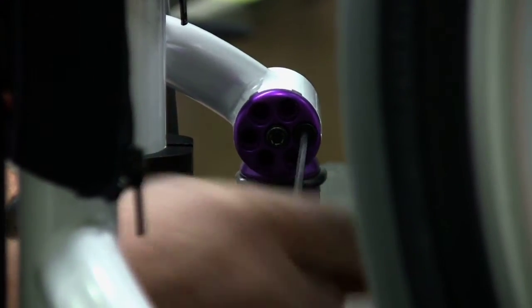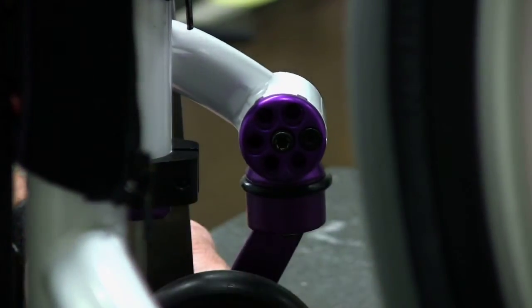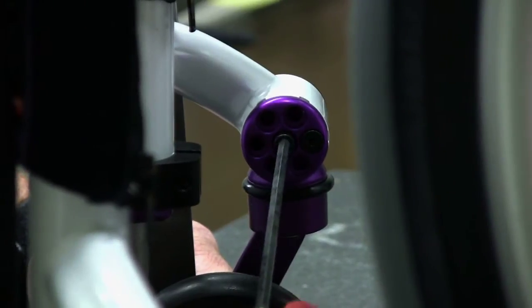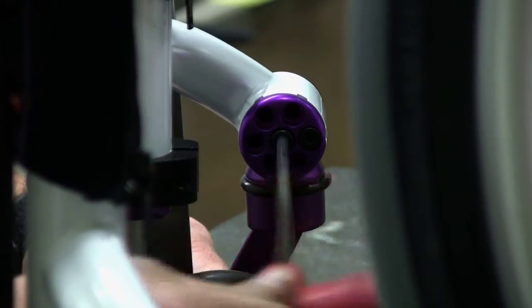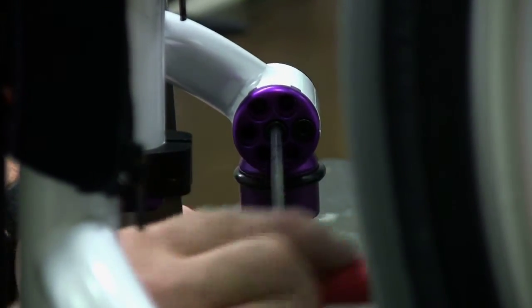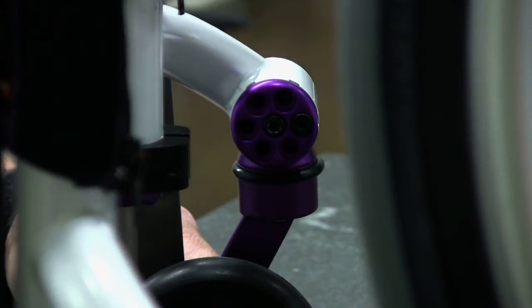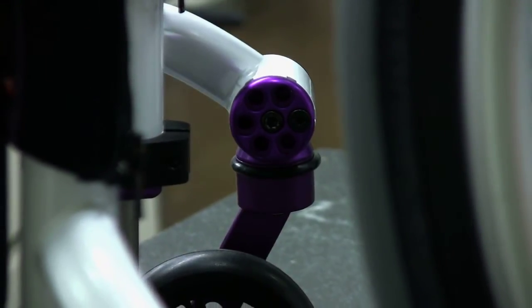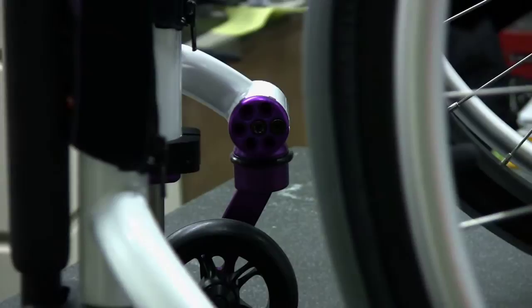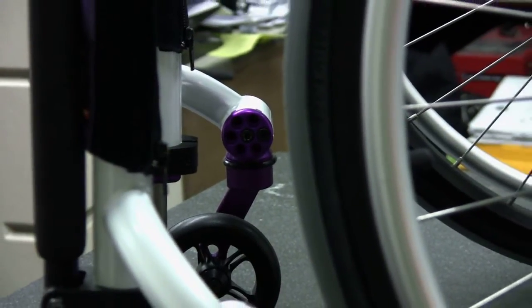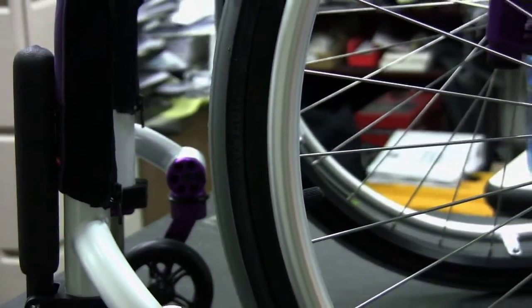Step 6: If not, pull the caster end cap away from the caster housing and rotate the caster end cap one-sixth turn and re-engage the caster end cap tabs in the tab slots. Check alignment again. If it aligns, proceed to step 7. If not, repeat this step using the next combination of caster end cap tabs and tab slots.